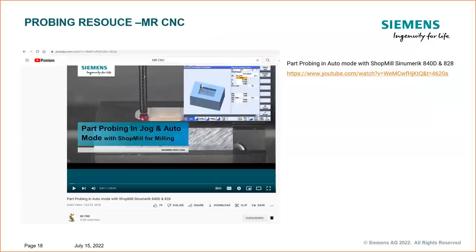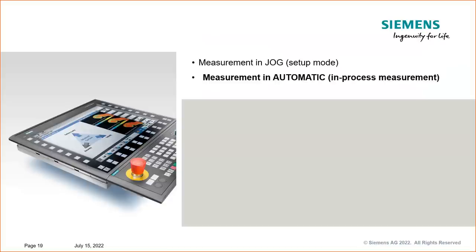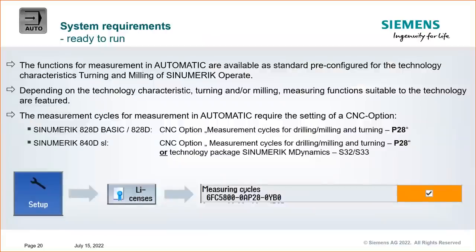Now getting into automatic mode — some system requirements: on the 828 verify you have the option, and on the 840D as well. Go to Setup > Licenses and search for the license; make sure you have the checkbox. The option is called P28. The number on screen is your reference to confirm you have the measuring cycles license.